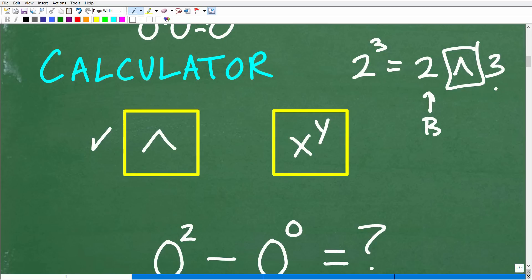So if you don't have this button, then you likely have something button like this, which is exactly the same thing. So 2 cubed would be 2. And then you would hit this button, then hit 3. And then, of course, 2 cubed is 8. So you need to know how to take powers using your calculator. And every calculator is a little bit different. But, you know, it's pretty standard. It's going to be 1 or 2 of these buttons.